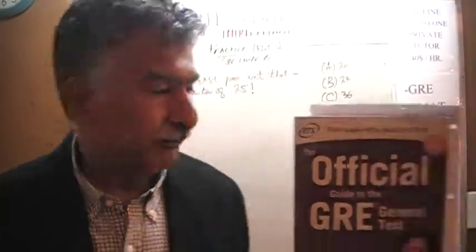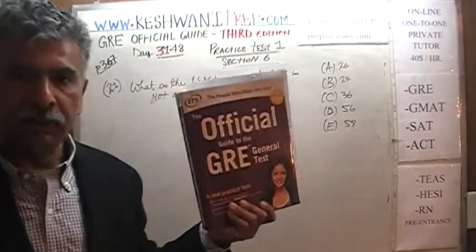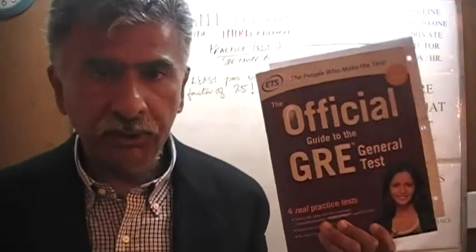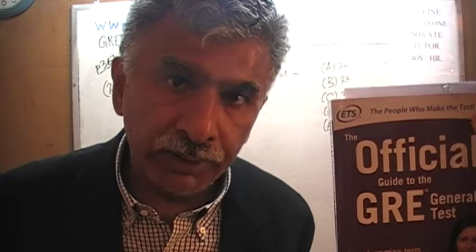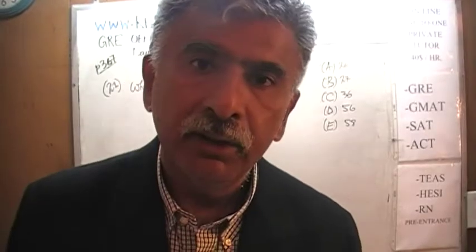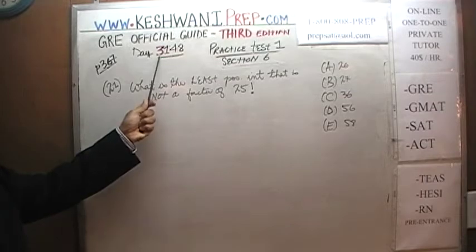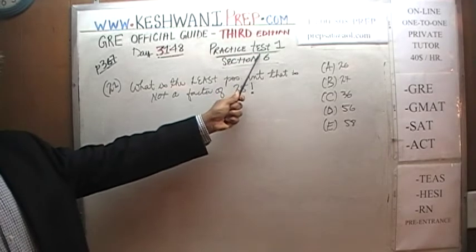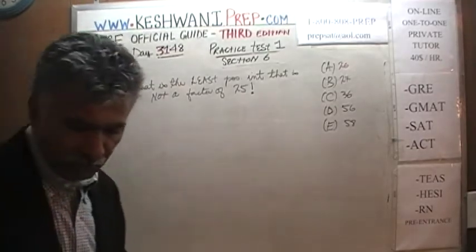Hello, my name is Keshwani — that's K-E-S-H-W-A-N-I. We are here because we want to prepare for the GRE. We have been solving math problems out of the official guide to the GRE, the third edition. If you do not own this book already, purchase one immediately — you're going to need it. Today is our lesson number 148, Day 3-148. We are solving problems from practice test number one at the very end of the book, page 367, section six. Problem number 21 is what we are about to do.